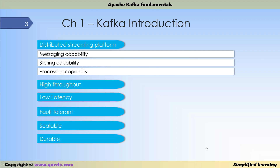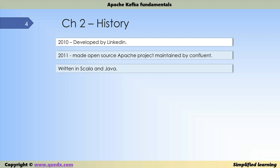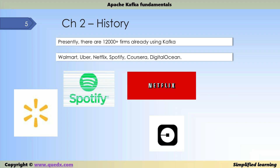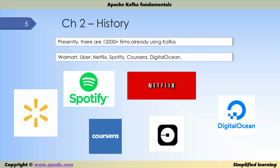Kafka was originally developed by LinkedIn. It was designed with a few key features in mind: simple API, high throughput, and scaled-out architecture. It was built using Scala and Java. At the time of publication of this tutorial, the latest version of Kafka available is 2.3.0. Presently there are 12,000-plus firms already using Kafka, including Walmart, Netflix, Spotify, Coursera, and DigitalOcean.